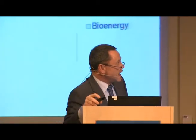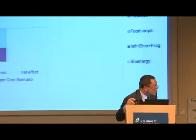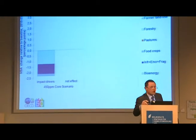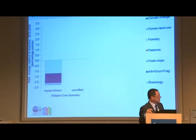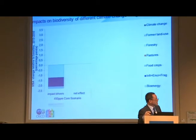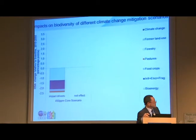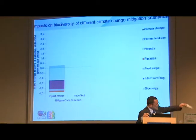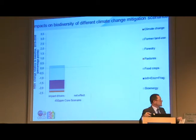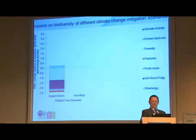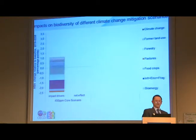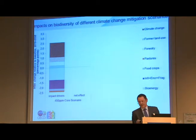There are food crops, infrastructure encroachment and fragmentation, and livestock. In the baseline scenario, those are relatively larger drivers - pasture is prominent - and then relatively less serious drivers. There is less weight coming in from bioenergy in the baseline. That band represents forestry, that one is former land use, and that one is climate change.